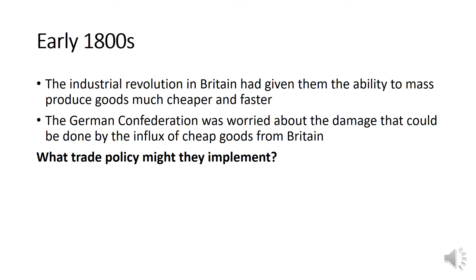In the early 1800s in Germany and Europe, a couple of key points must be addressed. The Industrial Revolution in Britain had given them the ability to mass-produce goods much cheaper and faster. Britain was churning out mass-produced goods and flooding other states throughout Europe and the world. The German Confederation was worried about the damage this influx of cheap British goods could cause, so they looked towards a protectionist policy — making British goods more expensive so that people in the German Confederation would buy German goods and support German businesses.